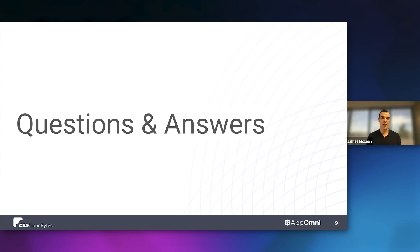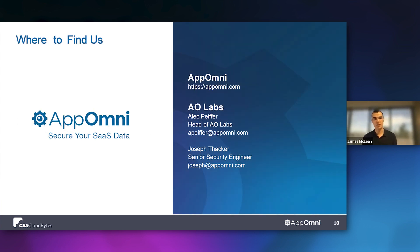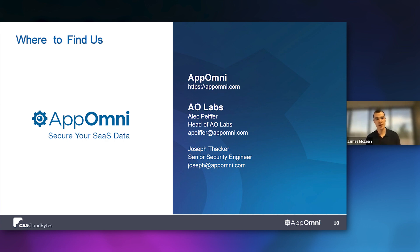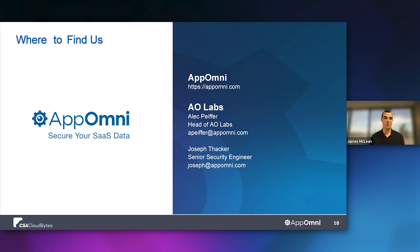That's it on the question front. We'll wrap up here and give a bit of information about us if you're interested in learning more. You can find us at appomni.com. Joseph referenced a couple of risks we've uncovered in our research — you can find the work Alec and Joseph are doing at AO Labs there as well. We had a great time chatting today about SaaS security — specifically the challenges of configuration, the scalability challenges, the risks unique to SaaS platforms, what to look for when purchasing a comprehensive SaaS security tool, and how to actually roll that out successfully. Hopefully you can use that tool to untie the Gordian knot within your organization. Thanks for spending this time with us — have a wonderful rest of your day.